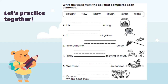Now we're going to practice the high frequency words. The question says: write the word from the box that completes each sentence. First, let's read the words in the box together. Now let's read the questions. Number one: 'A bug ___.' Can you see in the picture what the kid did with the bug? Do we say 'he caught a bug' or 'he laughed a bug'? He caught a bug — good job!